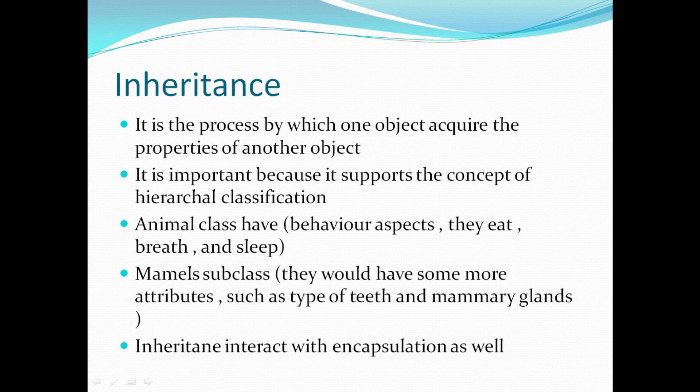In everyday words, the mammal class is the child class and the animal class is the parent class. So the mammal class has all the attributes of the animal class — it inherits them. And in addition to inherited attributes, it has its own attributes. For example, a type of teeth or mammary glands. So inheritance interacts with encapsulation as well.